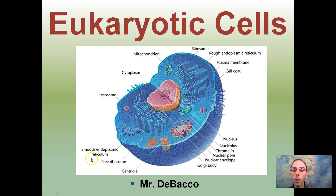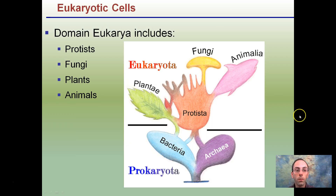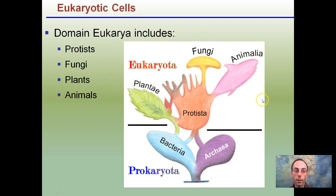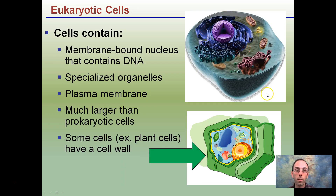First off, eukaryotic cells belong to the domain Eukarya. If you looked at my video on prokaryotes, we talked about archaea and bacteria. Here we're looking at basically the rest: the protists, the fungi, the plants, and the animals — these are all eukaryotic cells.